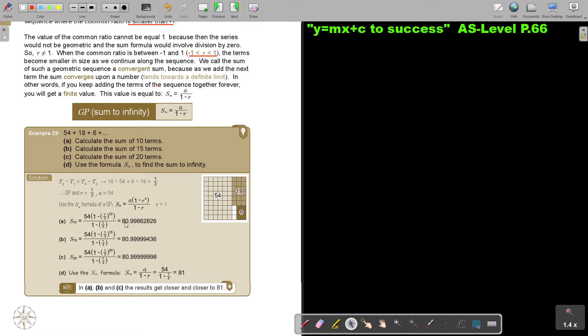Now, can you see? It's 80.99, 80.999, 80.99. So, it's tending towards 81. So, if you use this formula, you will get 81. So, it's almost like striving to that 81.